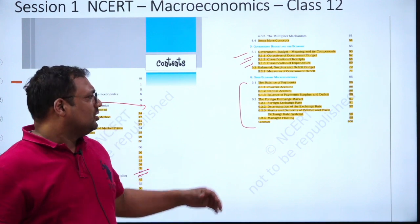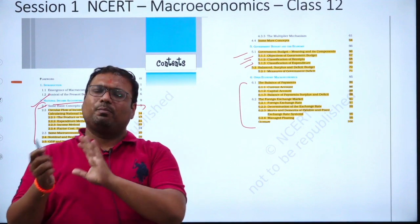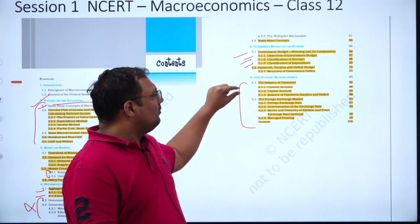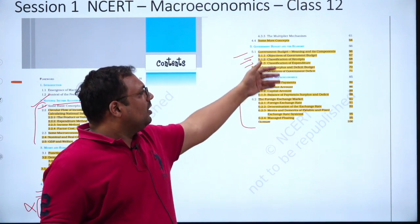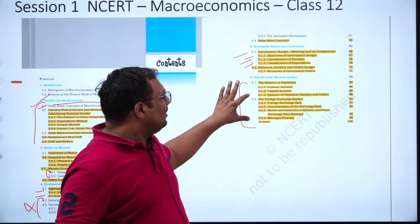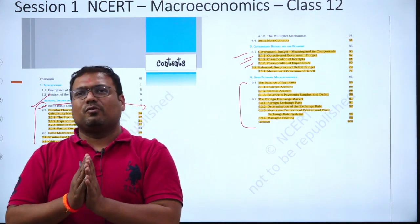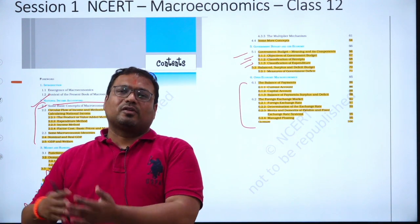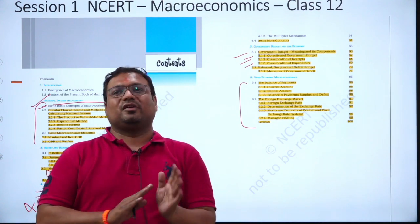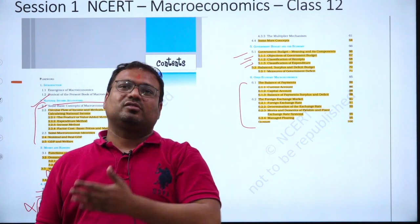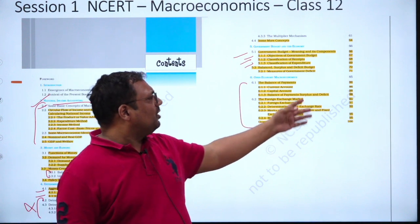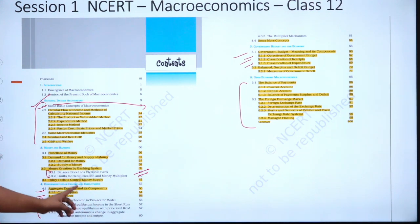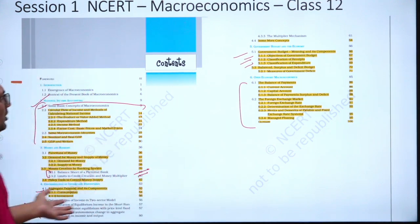Next is open economy macroeconomics — balance of payments, foreign exchange, and types of exchange rate. The NCRT covers balance of payments: what is part of the current account, what is part of the capital account — very similar to budget classification. It also covers the foreign exchange market: what is the exchange rate, how we determine it, types such as fixed rate and floating rate, and adjustments like depreciation and appreciation. When I cover this I will also cover real versus nominal exchange rate and effective exchange rate.